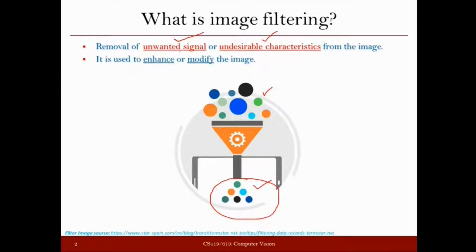When we are removing unwanted signal from the image, this may be done to enhance the image or it may be done to modify the image. In case of enhancement, it is clear why you want to do it — there's something in the image which we don't want. But sometimes we also try to modify the image — whatever present form the image has, we want to change it — and for that purpose also we use image filtering.